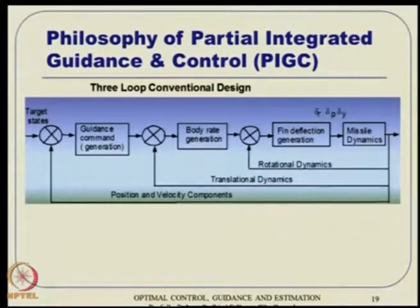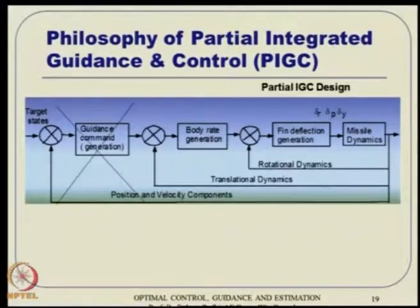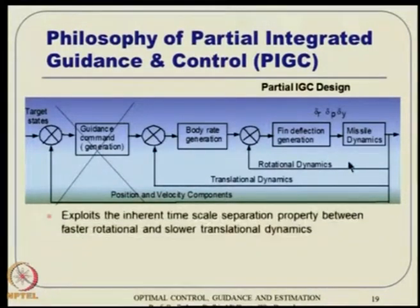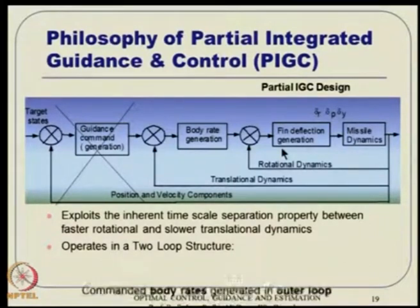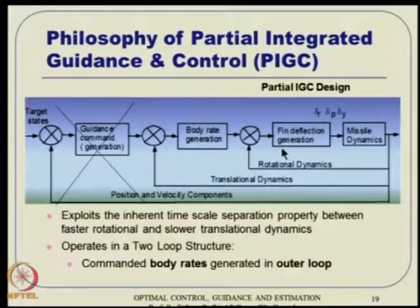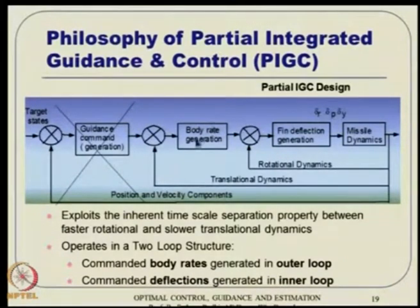The idea is: take the full guidance loop out, and whatever is left is what we call partial IGC design. It exploits the inherent time scale separation property and operates essentially in two loops. The commanded body rates are generated in the outer loop directly. Then using those commanded body rates, we generate the fin deflections in the inner loop.